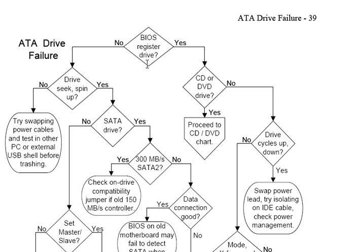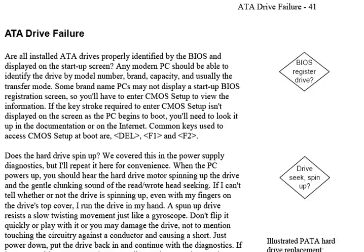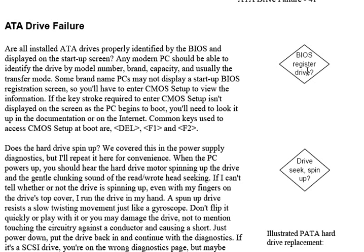Now if you're looking at these symbols and saying you don't know what 'BIOS register drive' means, or what '300 megabyte per second SATA2' means — all the labels are very short. What we do, which I think is unique in this book, is repeat these symbols in the margins. So as you read forward in the chapter, you can look for the symbol from the flowchart that you want more detail on, and you'll find in the text a description like 'are all installed ATA drives properly identified by the BIOS and displayed on the startup screen,' et cetera. You might not have a startup screen like that, so it explains how to get into CMOS on different computers.